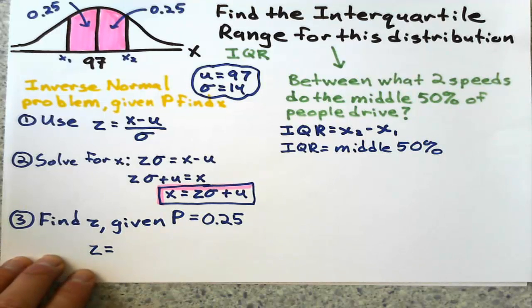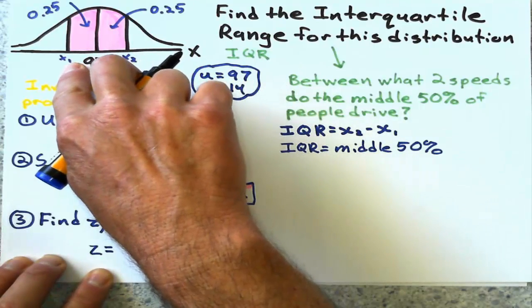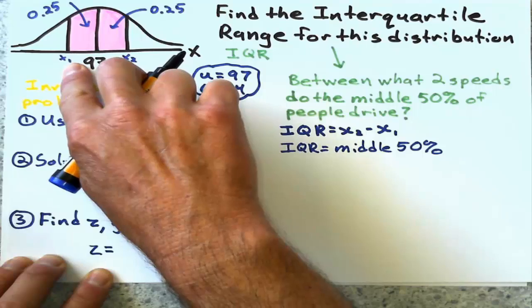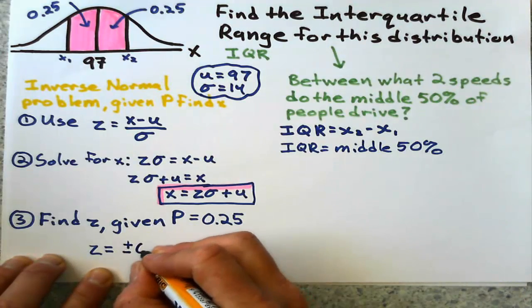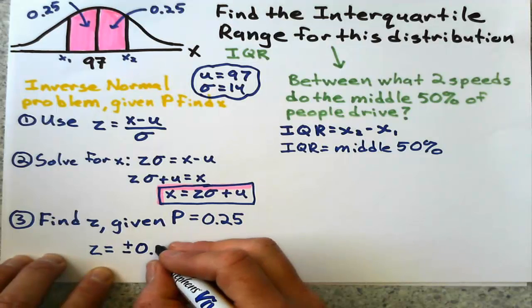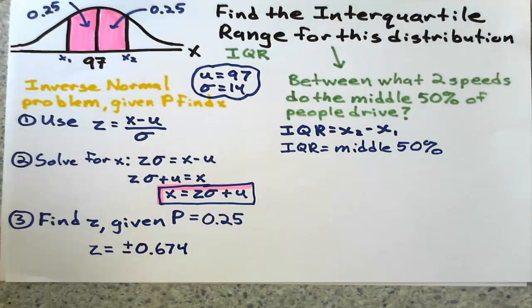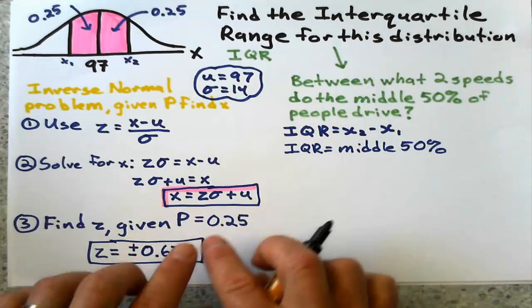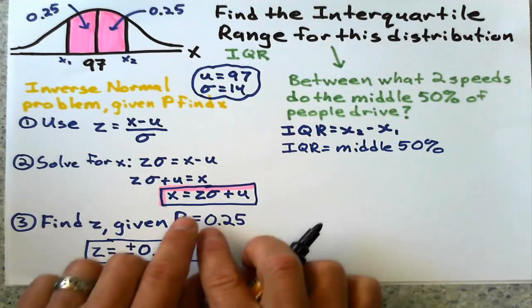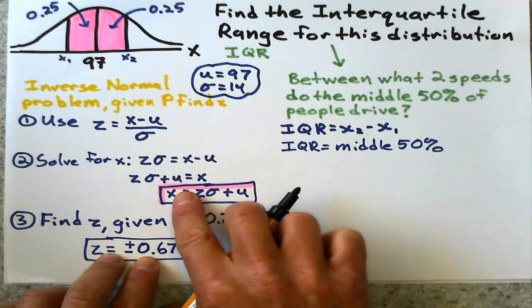Back to our problem. We got a Z value of positive 0.674 and negative 0.674, because if it's below the mean, it's going to be a negative Z value. Next step is to substitute Z and the standard deviation and the mean all in here to solve for X.